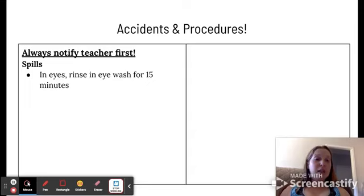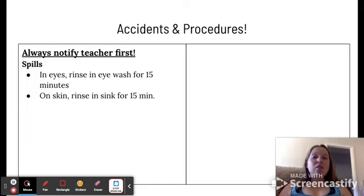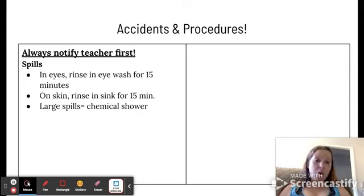With spills, if something gets in your eyes with or without safety goggles on, you have to rinse your eyes in the eyewash for 15 minutes and that water is ice cold. So please, please watch out from getting stuff in your eyes. If anything gets on your skin, you have to rinse it in the sink for 15 minutes. Again, with cold water. If it happens to be a large spill on you, like clothes and everything, you have to get in the chemical shower for 15 minutes.